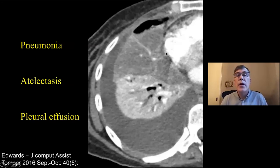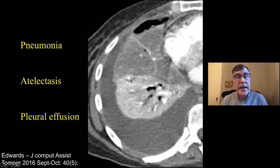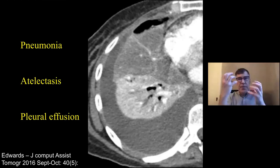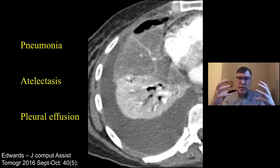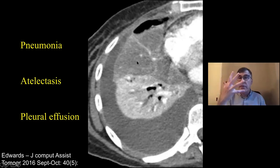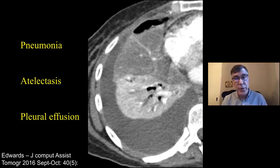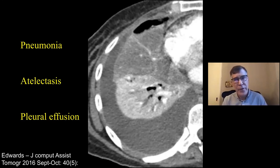Just as a review: if you have a contrast-enhanced CT scan, pneumonia or consolidation enhances less than atelectasis. In atelectasis, all the vessels are together — it fills with contrast and is very bright. In consolidation, the vessels are separated; it does not enhance to the same degree and should enhance the same as the paraspinal muscles. Atelectasis enhances much more. So if you're debating atelectasis versus pneumonia on a contrast-enhanced CT, you can favor one very strongly over the other.